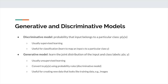A discriminative model is something where you give it an input and it computes the probability that the input belongs to a particular class. You're computing the probability for a particular output class given the input. This is pretty much the whole point of supervised classification — you have some kind of input that you put into a discriminative model, and the model produces a probability distribution across all of the possible classes.